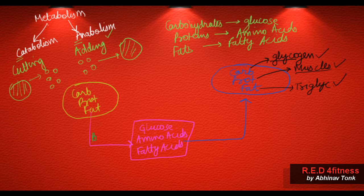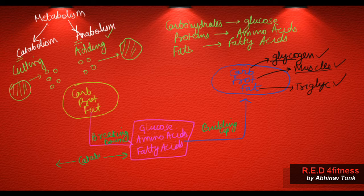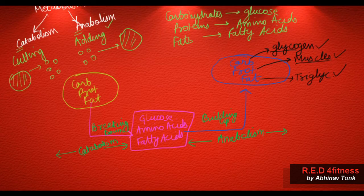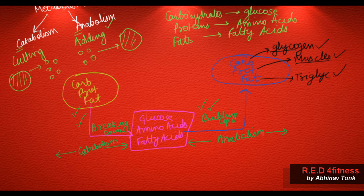This breaking down of macronutrients is known as catabolism, whereas the building up part is known as anabolism. The chemical reactions responsible for breaking down, and the enzymes required for building up — all of these, including breaking down, building up, and all chemical reactions — are collectively known as metabolism.